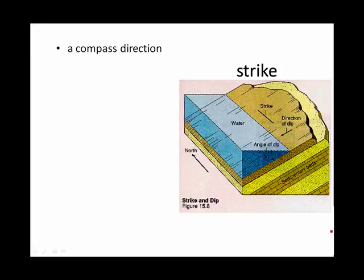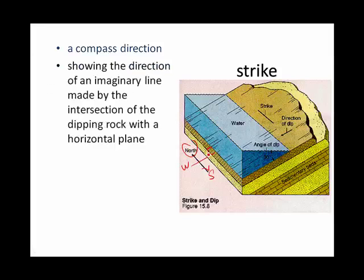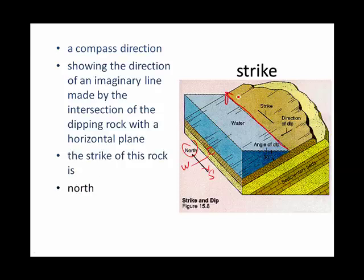Geologists also want to describe the direction in which the rock layers are tilting. We can reference north, south, east, and west. The compass direction is given by the strike. The strike is the direction of an imaginary line made by the intersection of the dipping rock with a horizontal plane — in other words, this line right there. In this case, the strike of this rock is north.